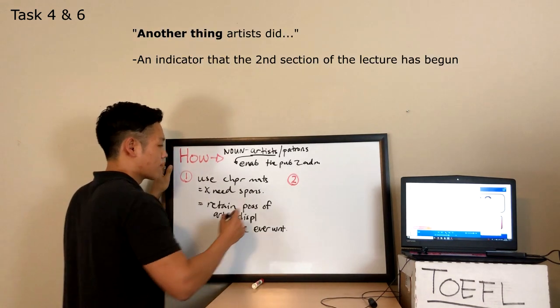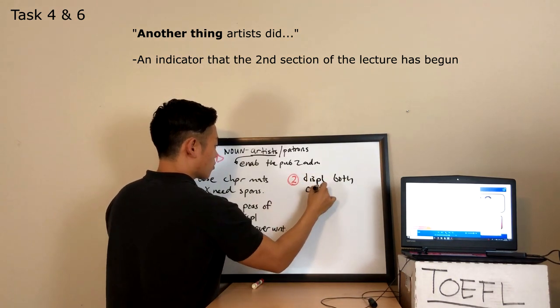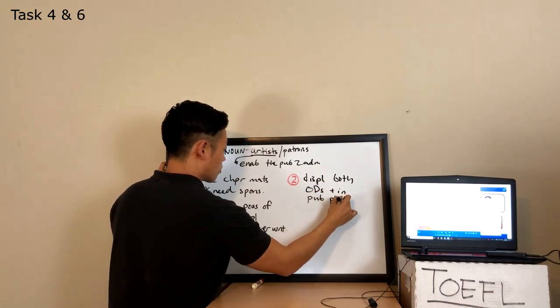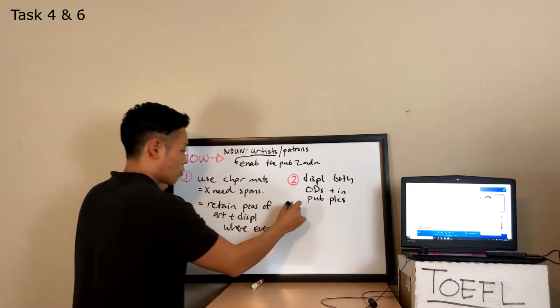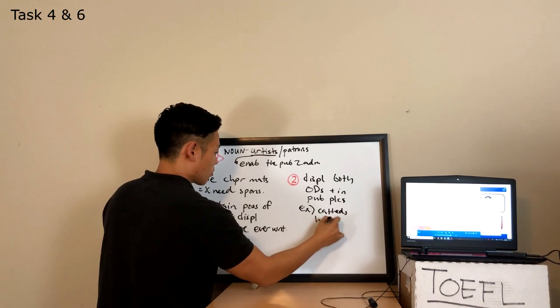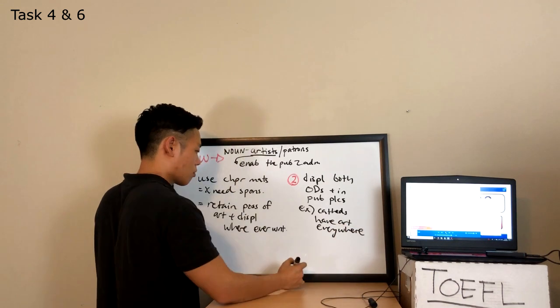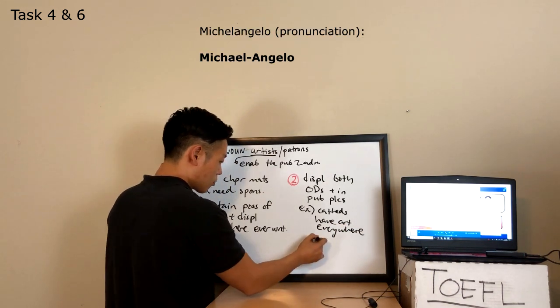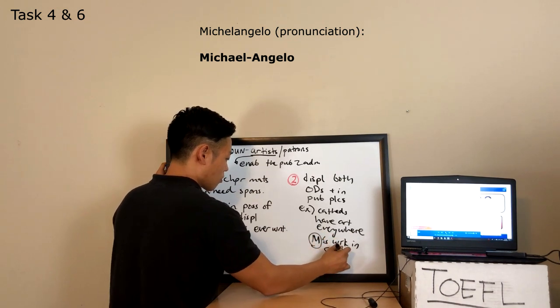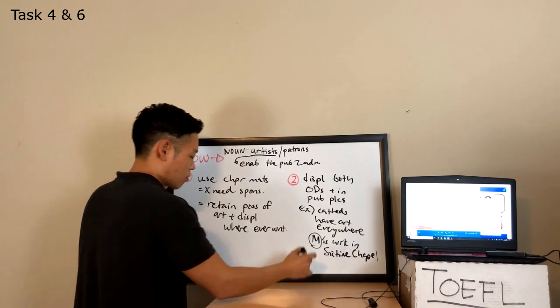Another thing artists did was to display their art both outdoors and in public places. Remember that artists didn't just do paintings. They did statues, sculptures, and many other kinds of art. Take a look at any cathedral. There is art everywhere. Look at the statues and the stained glass window in them. They're all works of art. And consider one of the greatest examples of art anywhere. Michelangelo's work in the Sistine Chapel. How many thousands or millions of people have seen his artwork? He attained what most artists strive for, for the greatest number of people to admire his work.